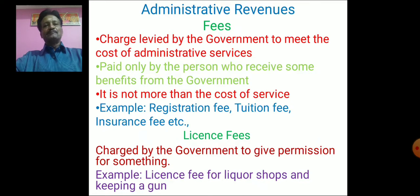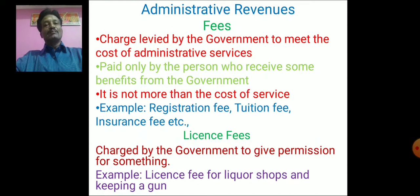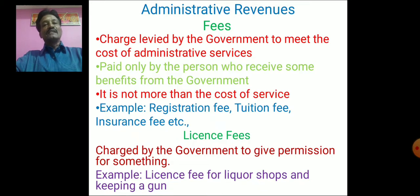The second source is license fee. A license fee is a charge levied by the government to give permission to hold or do something. For example, if a person wants to own a gun, he has to obtain a gun license from the government. If a person wants to open a liquor shop, he must get a license. So a license fee is charged by the government for granting permission to make or hold something.